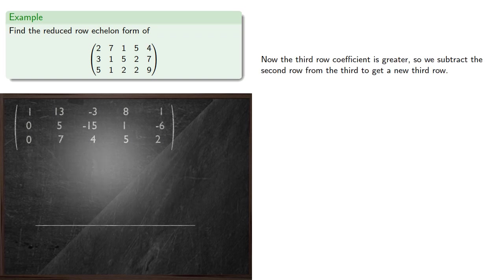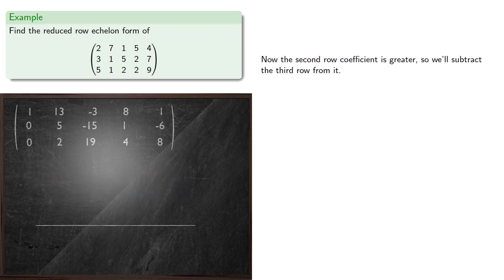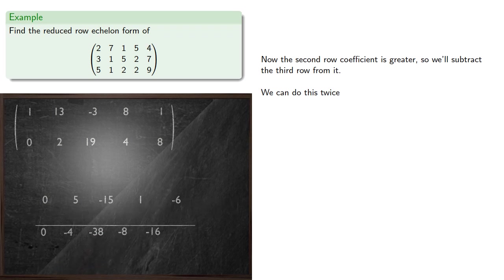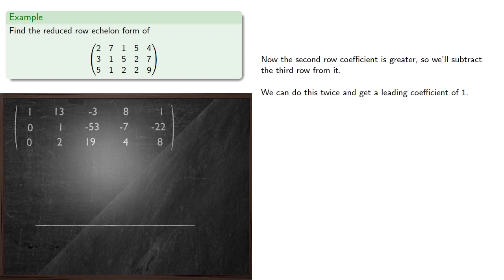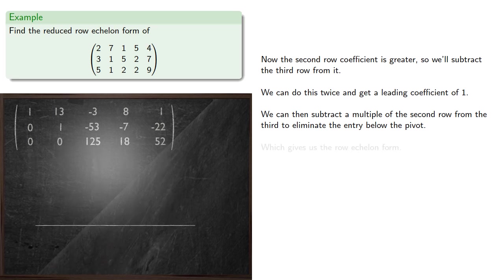Now the third row coefficient is greater, so we subtract the second row from the third to get a new third row. Once again, the second row coefficient is greater, so we'll subtract the third row from it. We can do this twice, and that brings us down to a leading coefficient of 1. We can then subtract a multiple of the second row from the third to eliminate the entry below the pivot, which gives us the row echelon form.